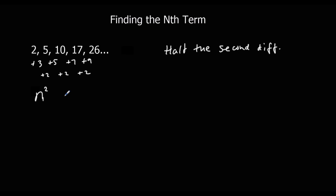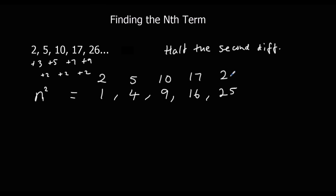We write out the n squared sequence: one, four, nine, sixteen, twenty-five. We know this sequence has got n squared in it, so we take that off the original sequence. Two minus one is one, five minus four is one, ten minus nine is one — we're getting one every time. So what's left after n squared is just one, meaning the nth term is n squared plus one.